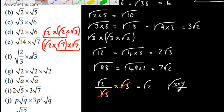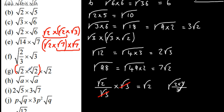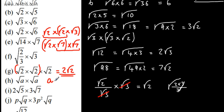For the next one, we've got the root of 2 multiplied by the root of 2 multiplied by the root of 2. As soon as we have a pair multiplied, that will give us the integer value under the root. So we've got two lots of root 2. Root A multiplied by root A is one of our laws, and that simply gives us A.